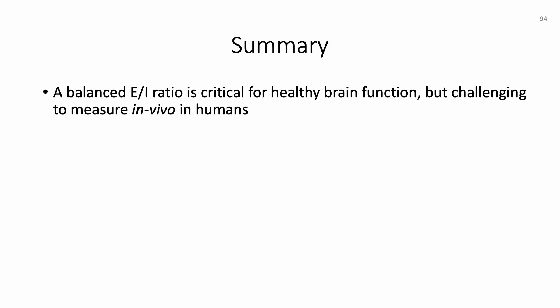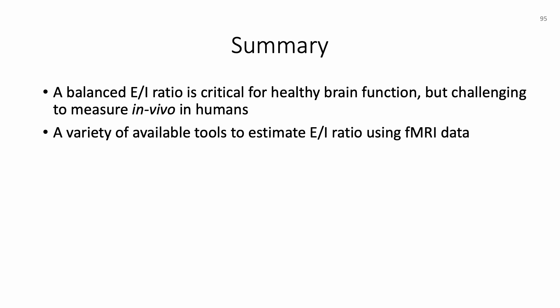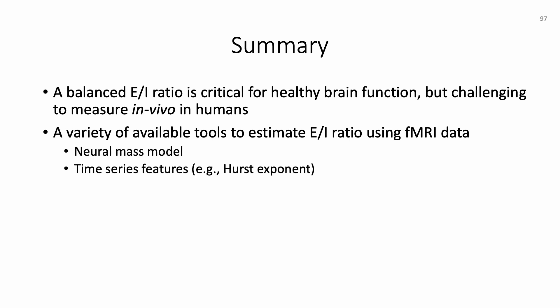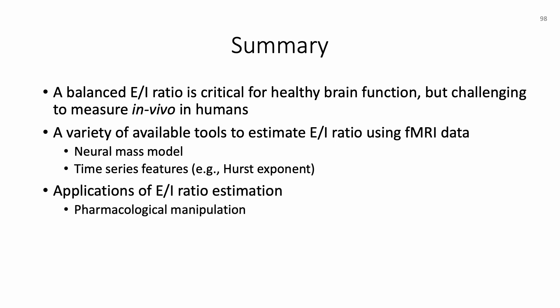In summary, a balanced EI ratio is critical for healthy brain function but challenging to measure in vivo in humans. There are a variety of available tools to estimate EI ratio using fMRI data, including the neural mass model and time series features such as the Hurst exponent. Applications include investigating pharmacological manipulation effects, examining how EI ratio changes over development, and understanding how EI ratio relates to cognition, among many other possibilities.